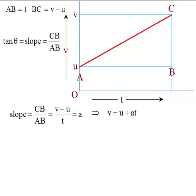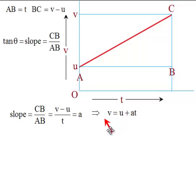So we write that slope equals CB upon AB, which is V minus U upon T, which is equal to acceleration. Cross multiplying, we get V is equal to U plus AT. This is the first equation: V = U + AT, where V is the final velocity, U is the initial velocity, A is acceleration, and T is the time.